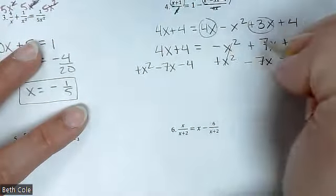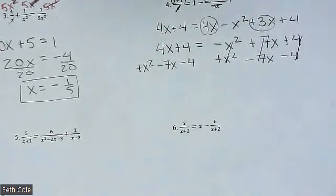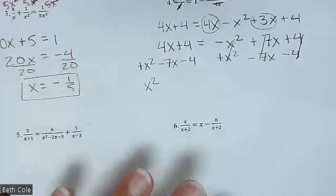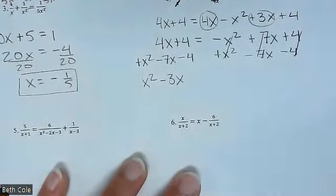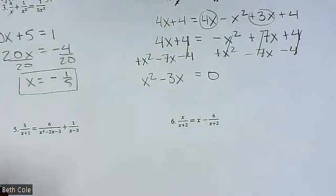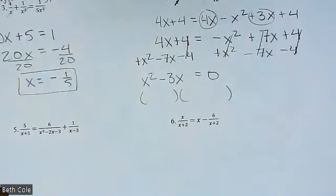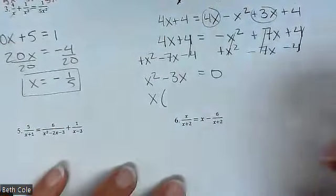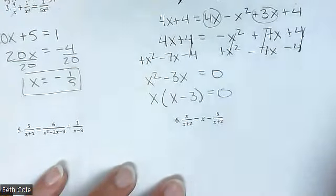If you have an X squared, you're probably going to have to factor, and so it needs to equal zero. Lining it all up in order, that gives us X squared, and then minus three X, equals zero. We are going to factor, but you can't just draw two sets of parentheses — you have to take an X out. It's GCF, greatest common factor. If you take out an X, you're going to be left with X minus three.